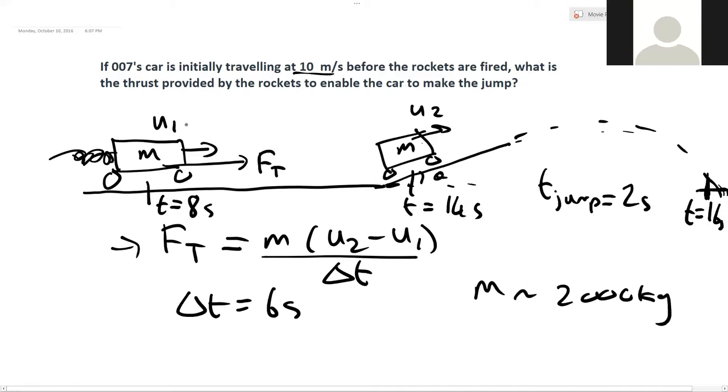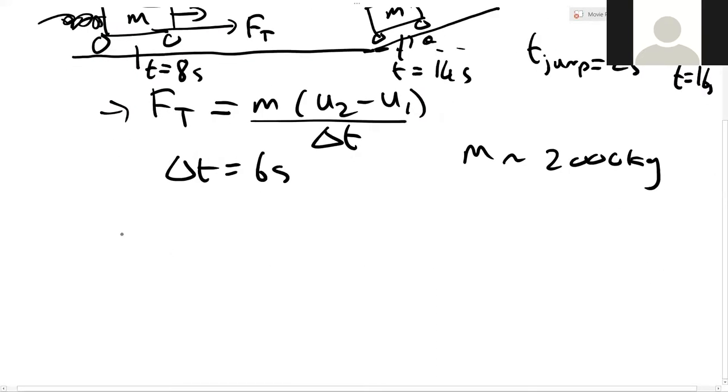We know u1, that's 10 meters per second. But we don't know what u2 is, and we have to figure that out from the clip. So we need to, first of all, find the angle of the ramp.